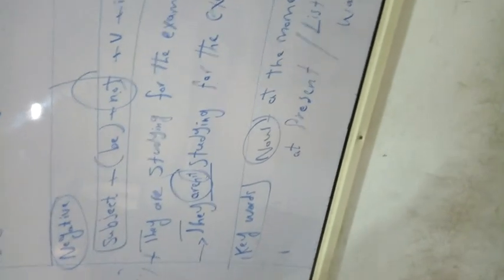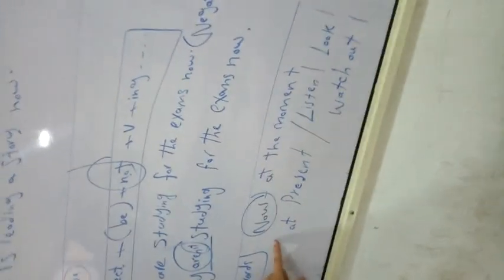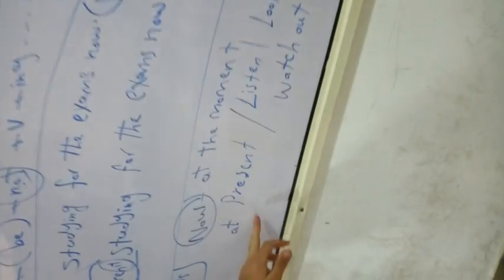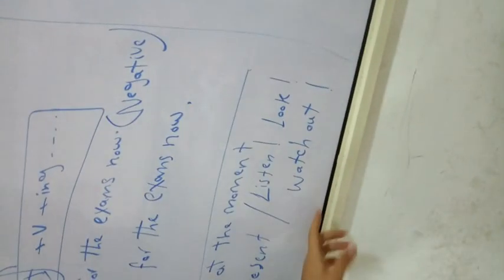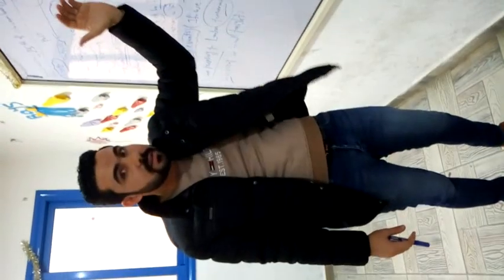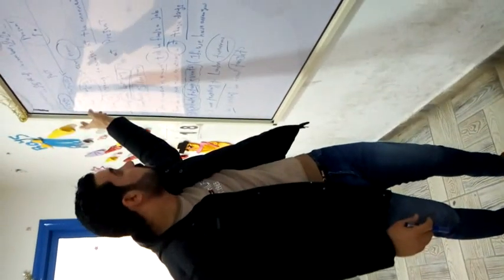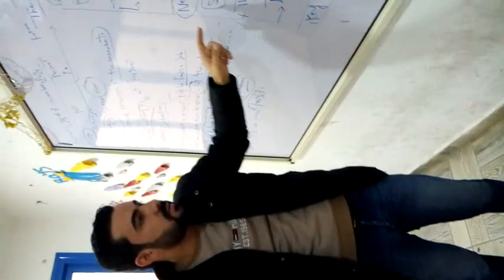So study these key words so that you can understand that this is a present continuous tense: now, at the moment, at present, like we have shown you here, and some people like listen, look, watch. These key words are going to help you understand. We talked about the usage, form, and the meaning.